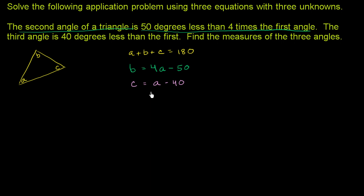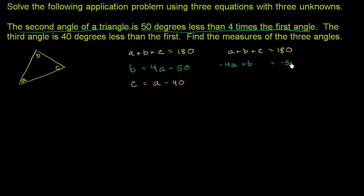What's a good first variable to try to eliminate? I'm going to bring the A terms onto the left-hand side of each equation. The first equation stays: A plus B plus C equals 180. Subtracting 4A from both sides of the second equation gives negative 4A plus B equals negative 50. And subtracting A from both sides of the third equation gives negative A plus C equals negative 40.